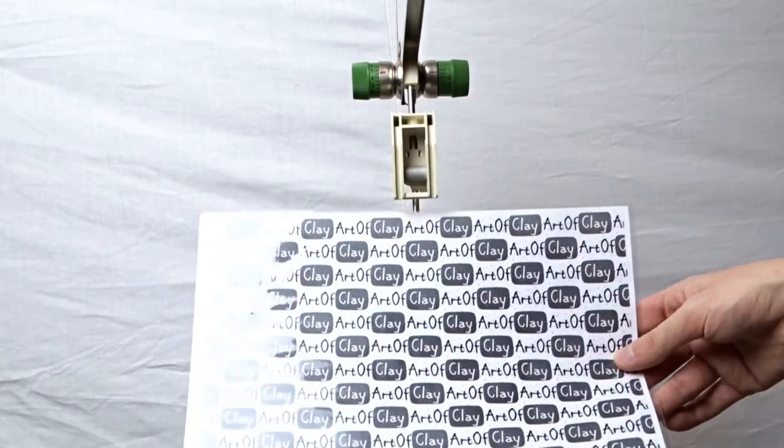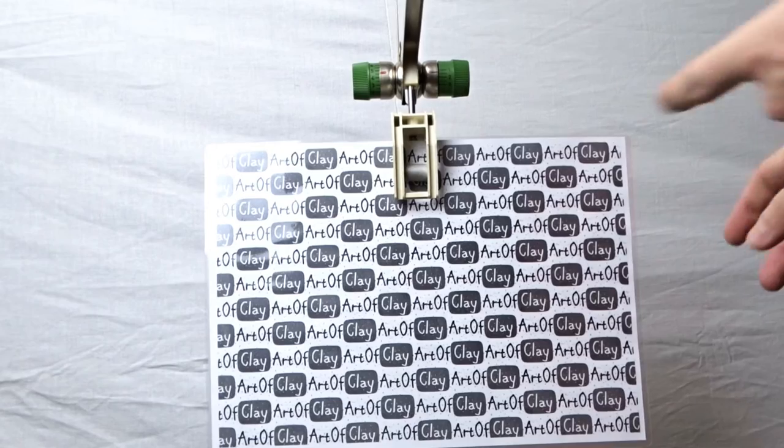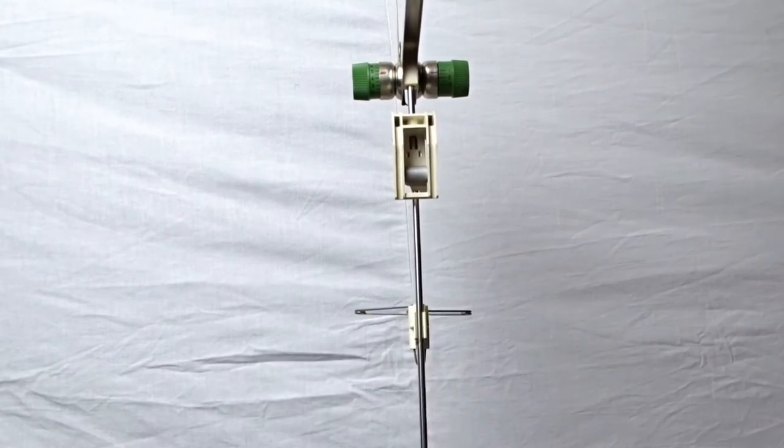Take the guide sheet and slide it into the clip. To remove it, push the metal roller up and the sheet will fall.